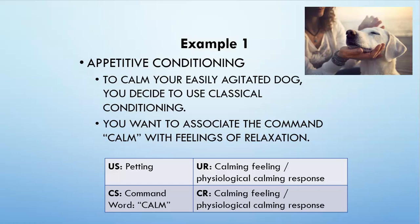Here's an example of good conditioning: to calm your easily agitated dog, you can use classical conditioning. If your dog is super excited all the time or has some anxiety, you can actually use classical conditioning to calm them down. You want to associate the command 'calm' with the feeling of relaxation. Naturally, when you just say 'calm' to a dog that's never heard the word before, they're not going to feel relaxed — they don't understand what it means. So 'calm' is going to be your neutral stimulus.